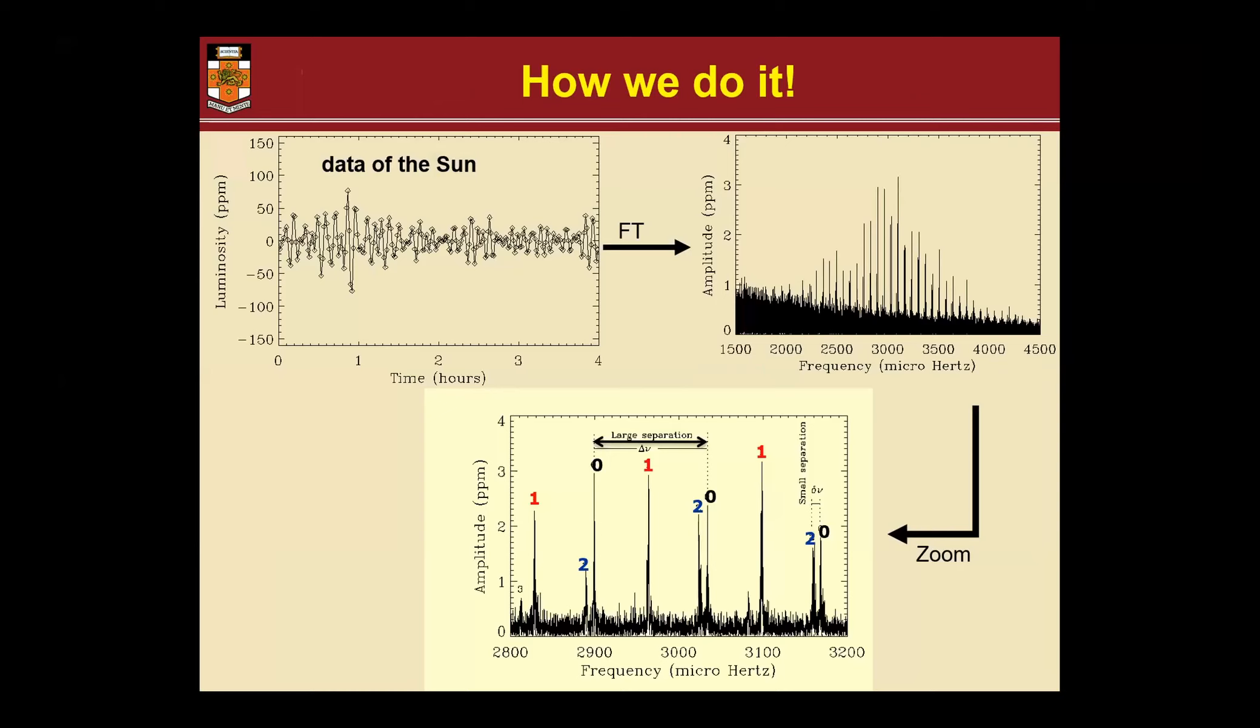This is how we do it - Claudia already mentioned that we do Fourier transform of long time series. This is the Fourier of the sun, but this is what it looks like when you do it. You see all these peaks sticking above the noise - every peak is an oscillation mode, its frequency and its amplitude.